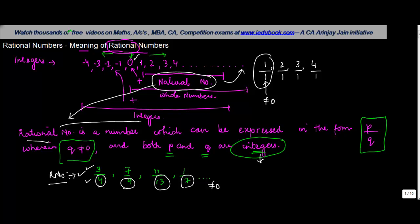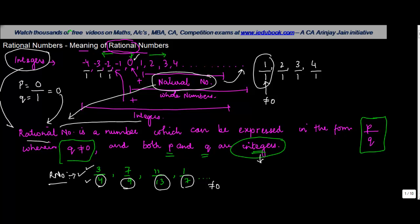How about 0? If you write 0 as 0 upon 1, then P is equal to 0, Q is equal to 1, and the result will be equal to 0. And 0 we know is an integer, so even 0 is a rational number. Similarly, any of the integers can be written as that number divided by 1. Hence every integer is also a rational number.